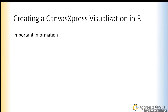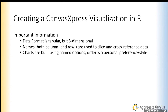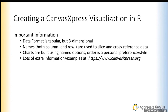Let me give you a little background on Canvas Express visualizations. Just like any charting package, it takes a little getting used to. Since it was designed for very large datasets in the genomics field — though it applies to any field — the data format is tabular but three-dimensional. Think of a data table with extra information. It actually utilizes both column and row names to cross-reference datasets. Charts are built using named options.